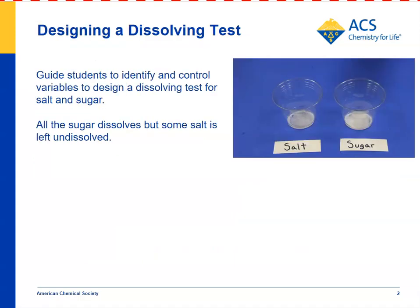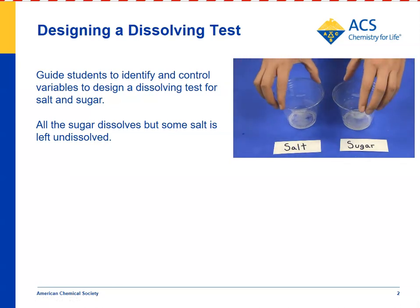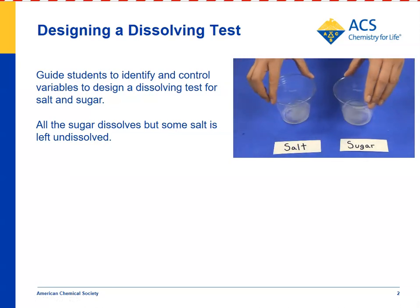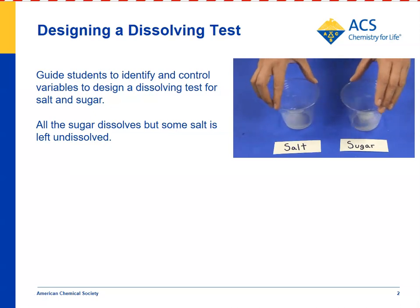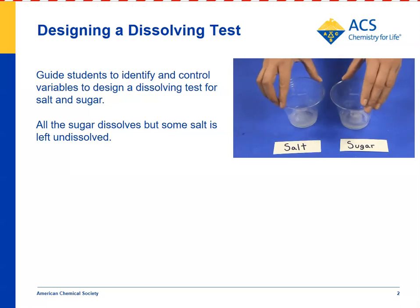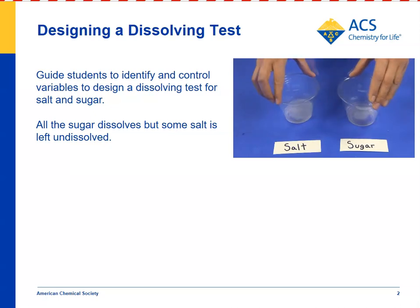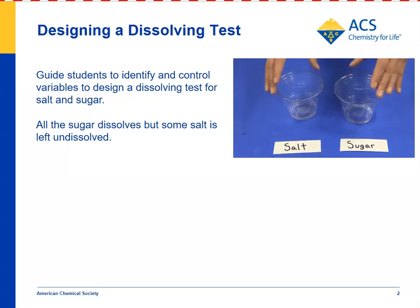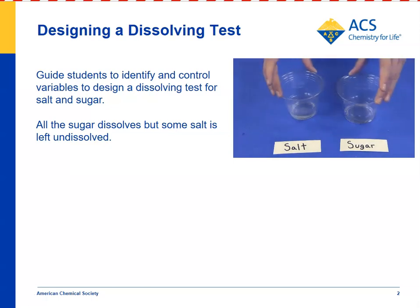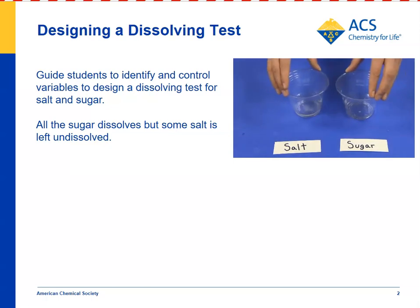Part of the lesson involves a discussion with students about how to set up a fair solubility test. The idea is to put the same amount of salt and sugar in two cups, add the same amount of water, and swirl them in the same way for the same length of time to see which one dissolves the most. Eventually, students will see that sugar dissolves completely, but there's some salt left behind.